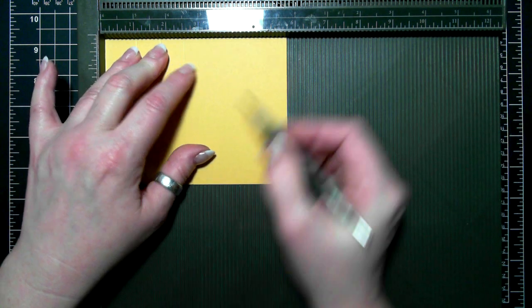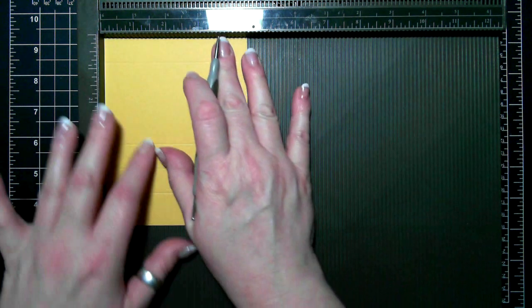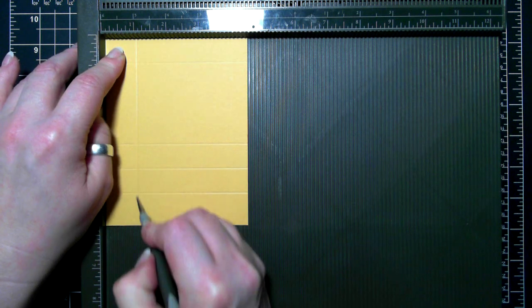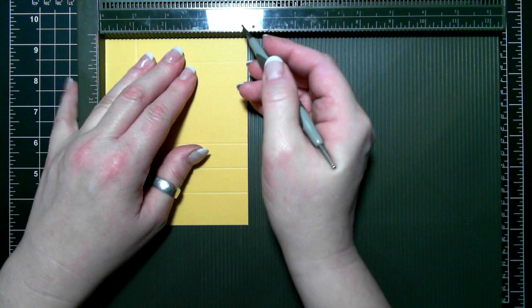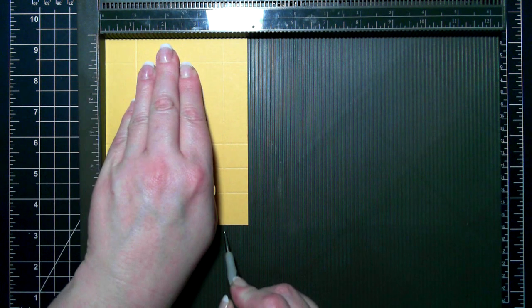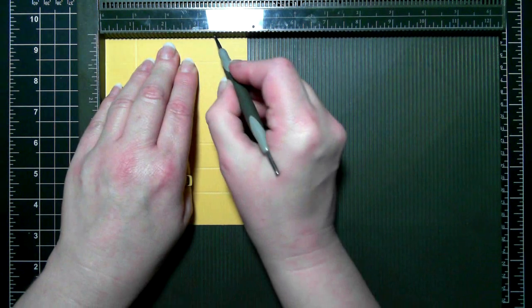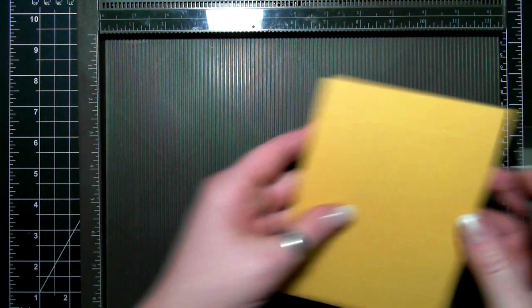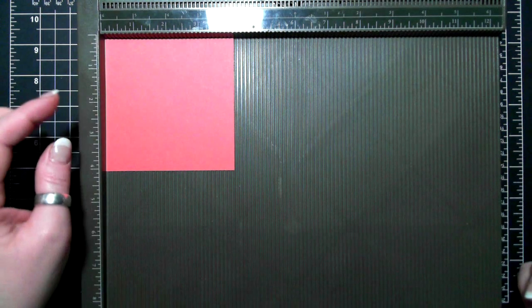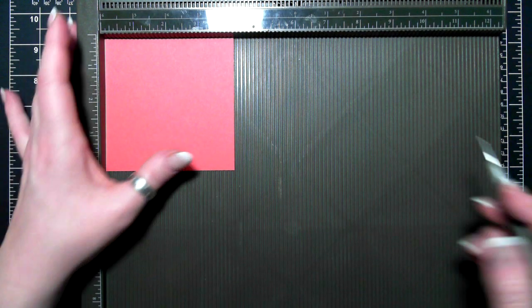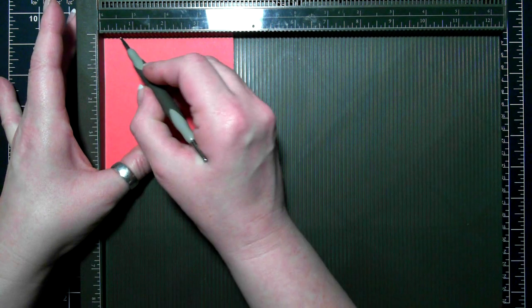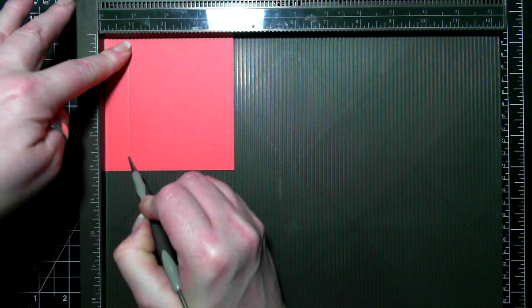And then once again at 5. Flipping it around, I'm scoring at 1 and 3 and a half. And then for the lid, 4 and 1 16th by 4 and 1 16th, I'm going to score at three quarters of an inch all the way around.